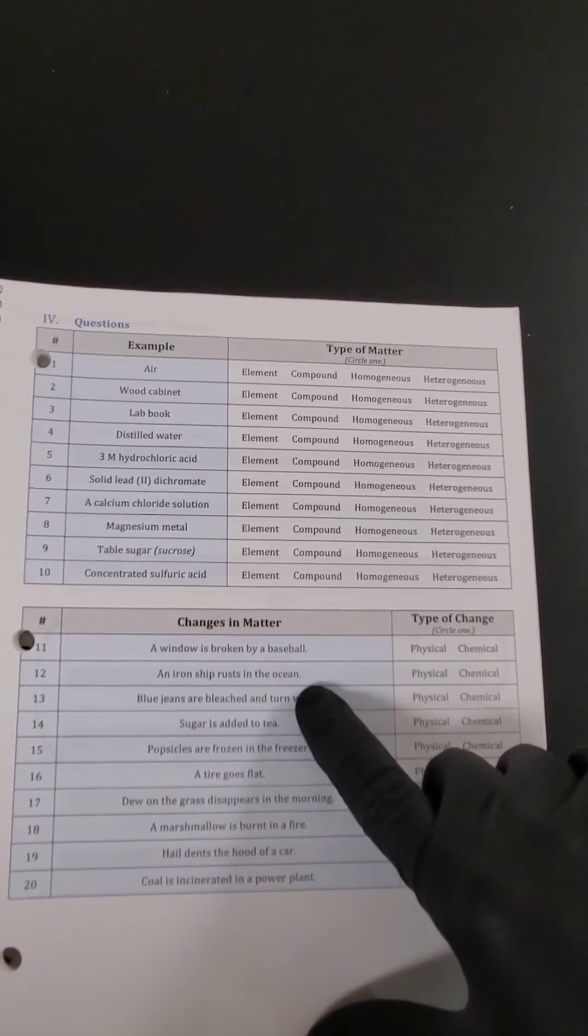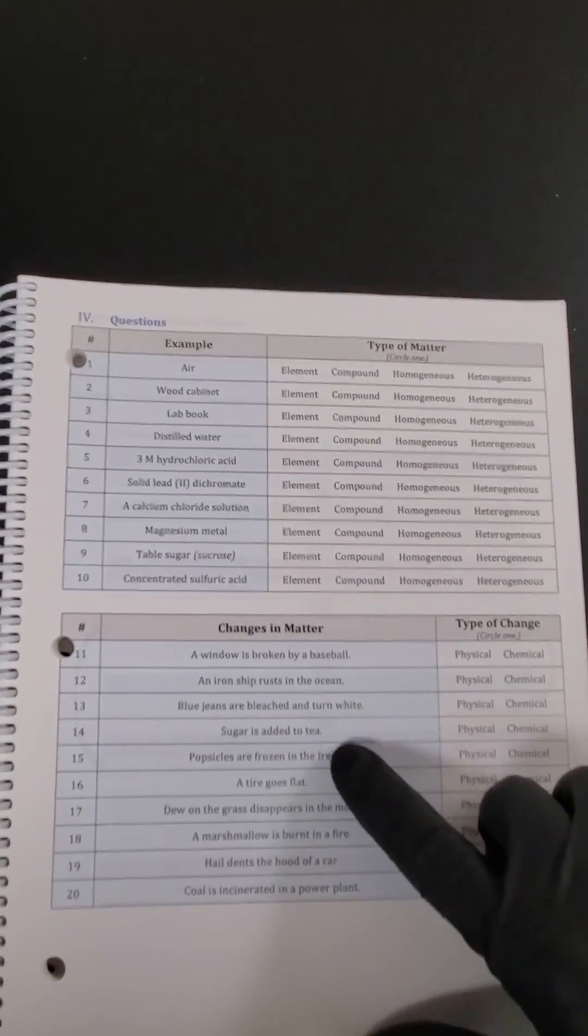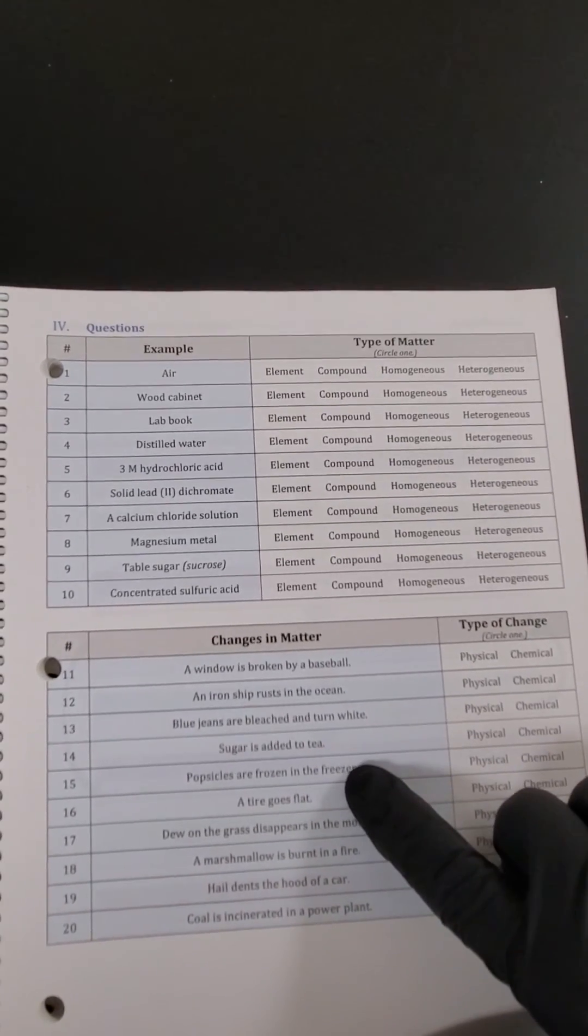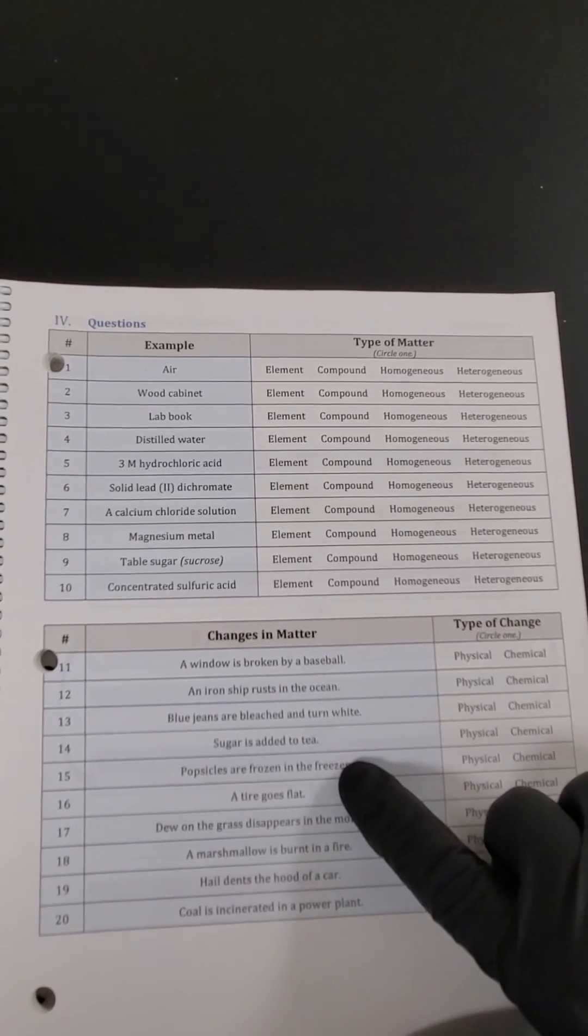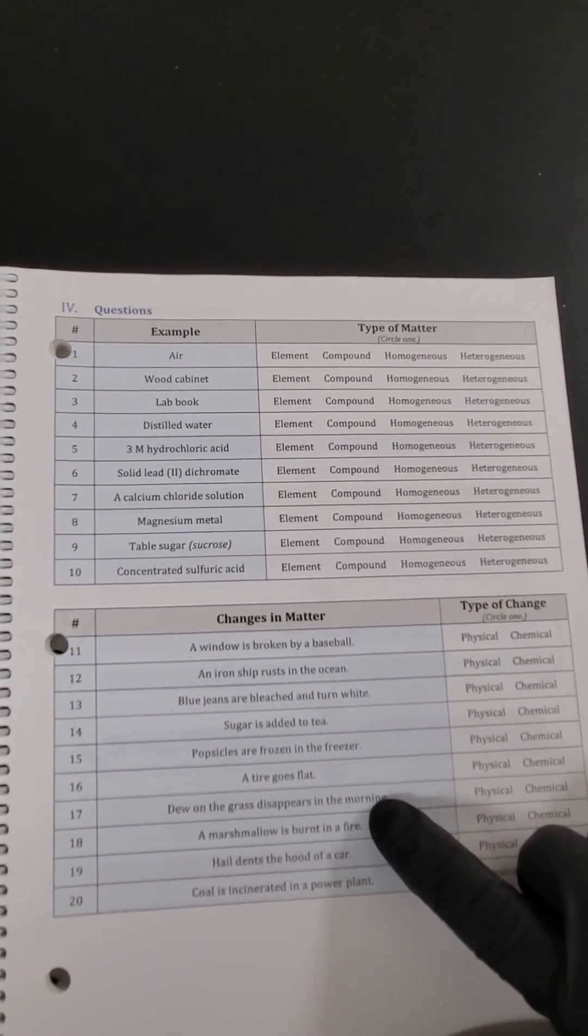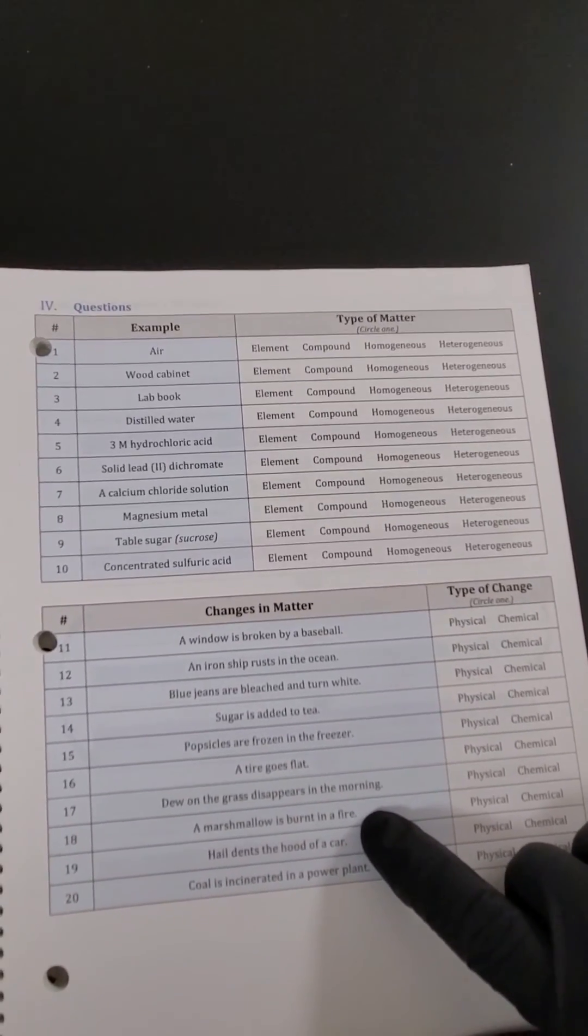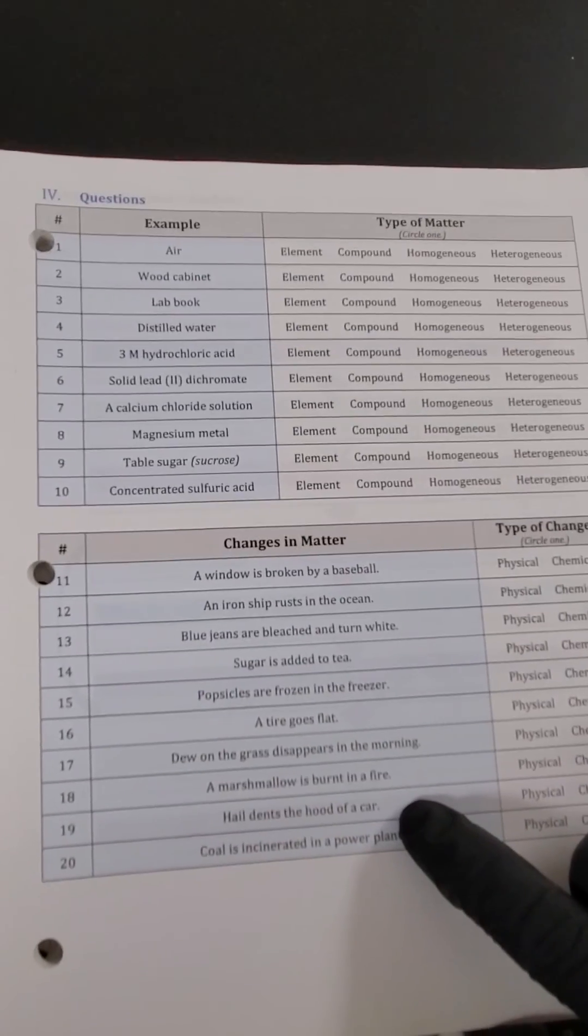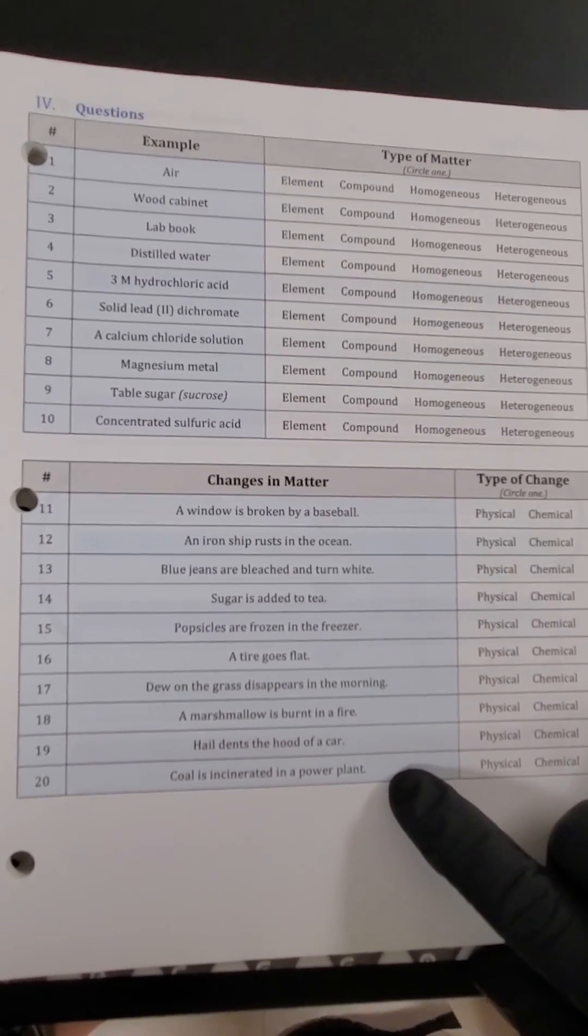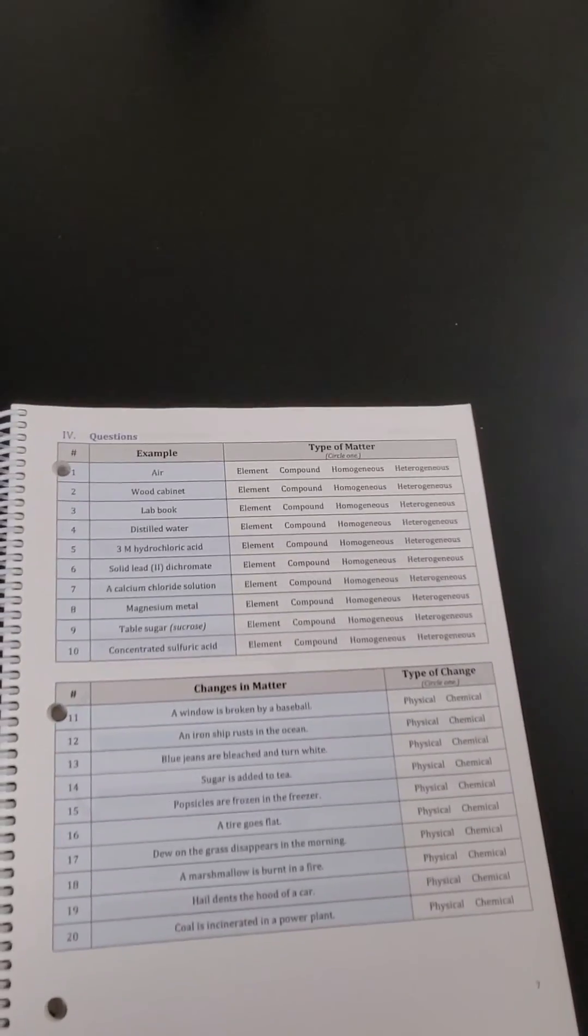So when you break a window with a baseball, is it still a window? When a ship rusts, can it ever unrust? If blue jeans are bleached, can they ever be unbleached? If sugar is added to tea, could you remove the water and get the sugar back? If popsicles are frozen, can they ever be melted? If a tire goes flat, can you ever air it back up? If dew disappears in the morning, can it reappear at night? If a marshmallow is burnt, can you ever unburn it? If hail dents your car hood, can it ever be undented? And then if coal is burnt in a power plant, could you ever get the coal back? Those are the ideas that will help you understand this chapter more. And that's it for this lab.